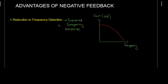Without feedback, the gain of the open loop amplifier is very high, around 10 raised to power 5 to 10 raised to power 6. To control this, op-amps are provided with internal compensation circuitry, and because of this internal compensation circuitry the gain of the open loop amplifier is very high.